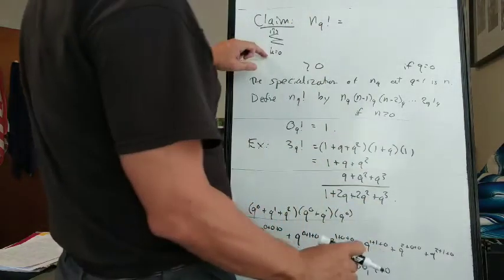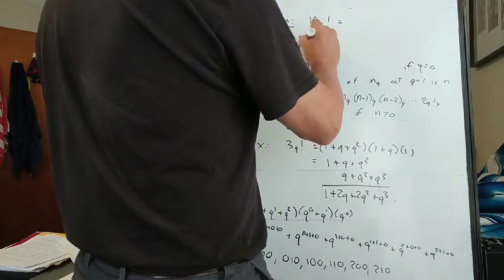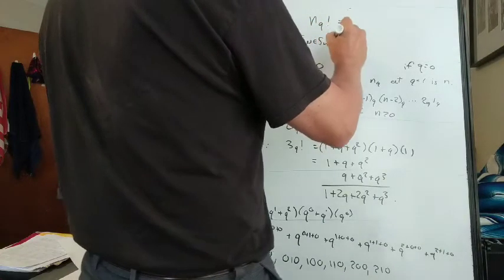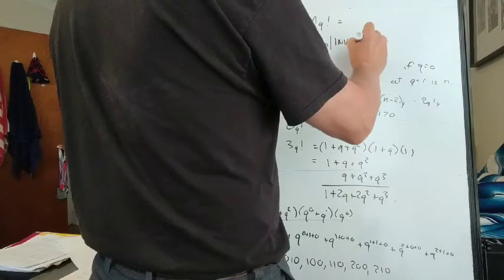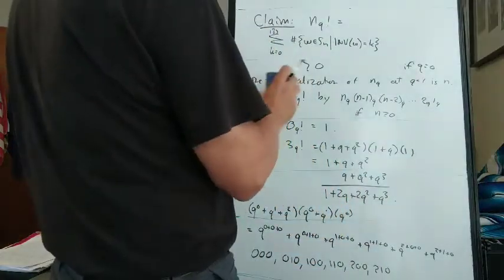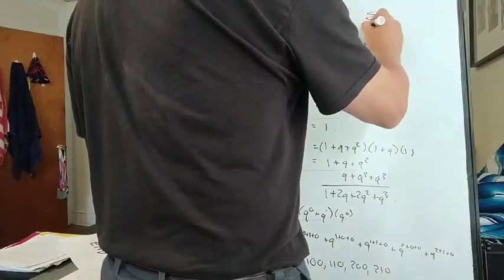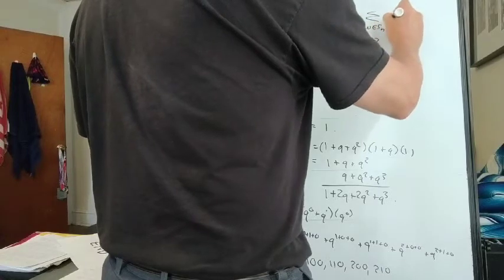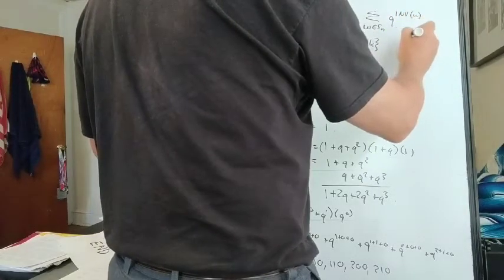So it's a sum as k goes from 0 to n choose 2 of the number of permutations in S n that have k inversions. Another way to write this is the sum over all permutations in S n of q to the number of inversions of that permutation.